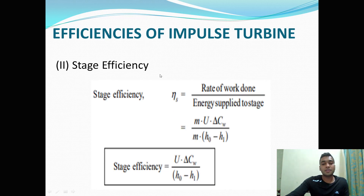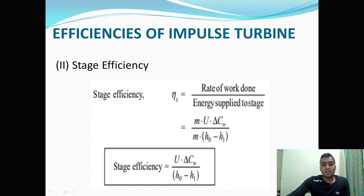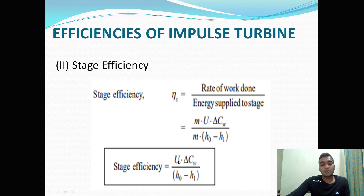Let us understand the second efficiency, that is stage efficiency. Stage is your combination of fixed blade and moving blade — fixed blade is your nozzle. Stage efficiency is the ratio of rate of work done to the energy supplied to the stage. Rate of work done comes from the driving thrust from the rate of change of momentum. Energy supplied to the stage is the enthalpy change at the inlet and outlet of your nozzle. The resulting formula is blade velocity multiplied by delta CW (change of tangential component of velocity) divided by H0 minus H1.